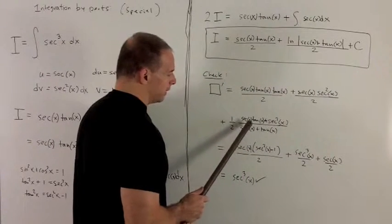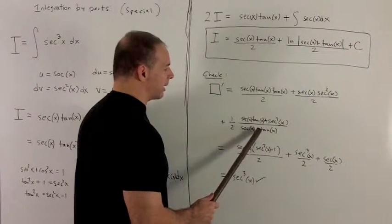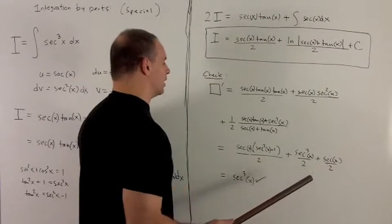And then you'll note here, we can factor a secant out of the top, and then what's left over matches the bottom. So this is going to collapse down to one half secant x.